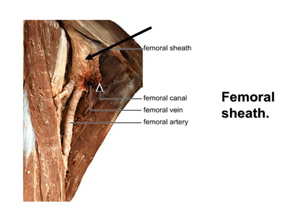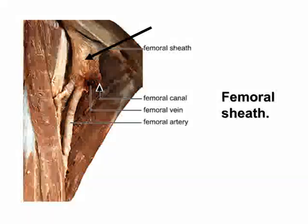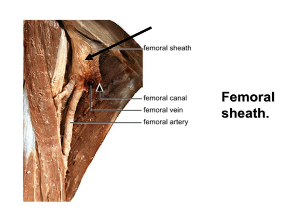The femoral sheath is a sleeve of tissue which is continuous with the fascia from within the abdomen. There is no sheath present at birth, but it is pulled down as the limb grows.